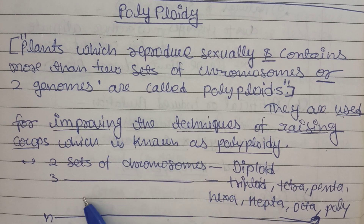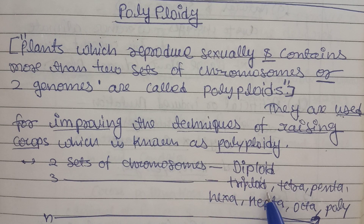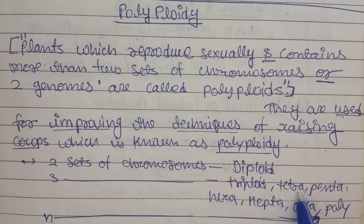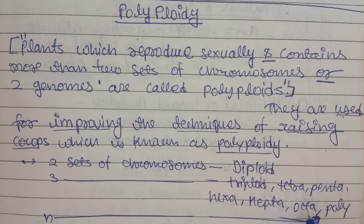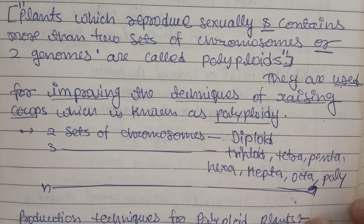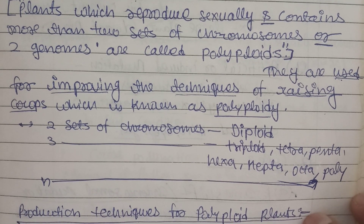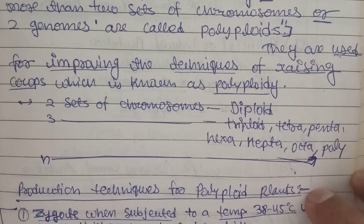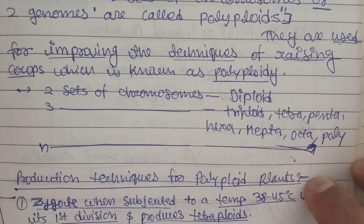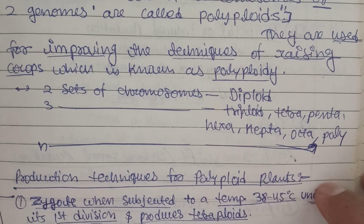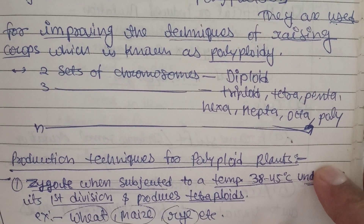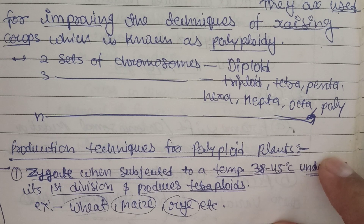The chromosome sets can vary: two sets of chromosomes is called diploid, three sets is triploid, four sets is tetraploid, then pentaploid, hexaploid, heptaploid, octoploid, and if there are n sets of chromosomes it is called polyploid.